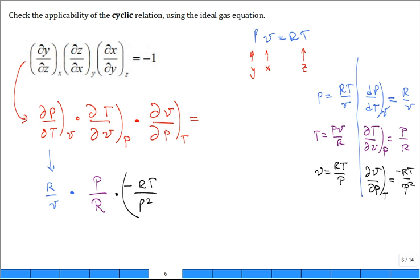And now we just see what cancels. One of the P's goes. One of the R's goes. But PV is equal to RT. So they go. You're left with negative one. Just as we set out to do. Thank you.